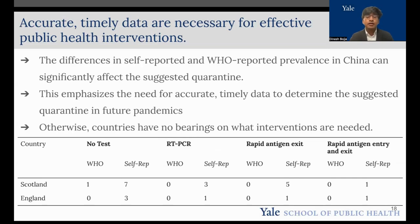In Scotland, with no testing, self-reported data suggests a seven-day quarantine, while World Health Organization data suggests only one day, meaning that it's necessary for countries to have accurate and timely information to determine the suggested quarantine and make optimal public health decisions for their constituents.